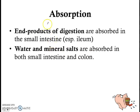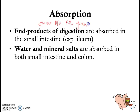We can summarize absorption in these two statements. Firstly, the end products of digestion — glucose, amino acids, fatty acids and glycerol — are absorbed in the small intestine and especially the ileum, which is the last part of the small intestine. While water and mineral salts are absorbed in both the small intestine and the colon, which is the large intestine.